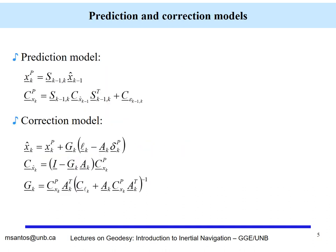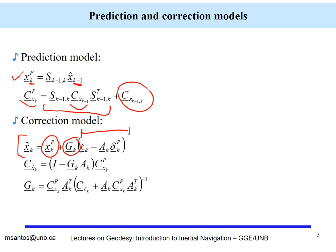In the prediction model formulation, we have the transition from the previous epoch to the current epoch. Importantly, we can also predict the covariance matrix based on the covariance matrix of the previous estimate — this is covariance propagation, where the transition matrix plays the role of the Jacobian of transformation. Here is the covariance matrix of the transition noise. The correction equation applies a correction to the predicted value; the correction is basically the innovation vector weighted by the gain.